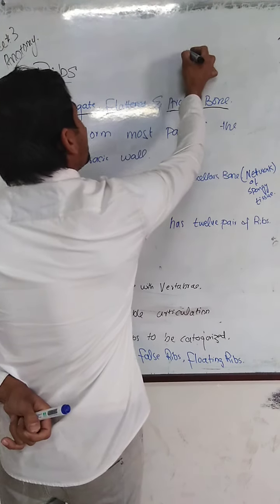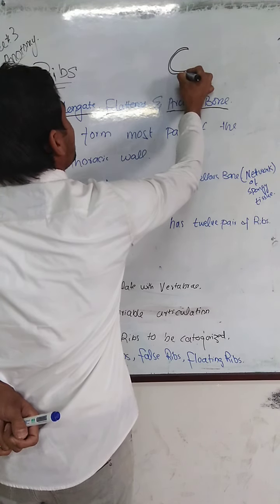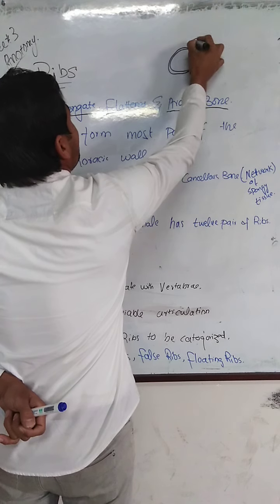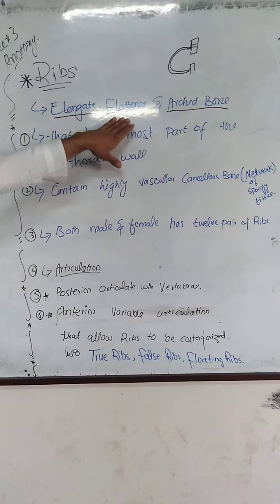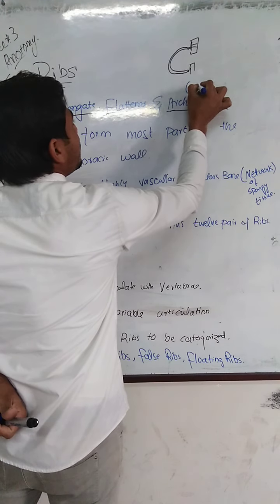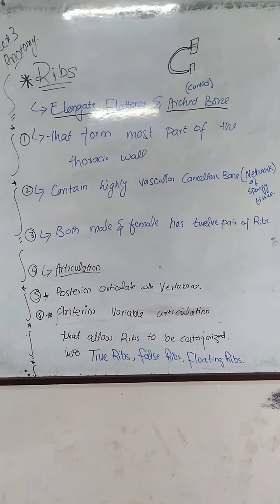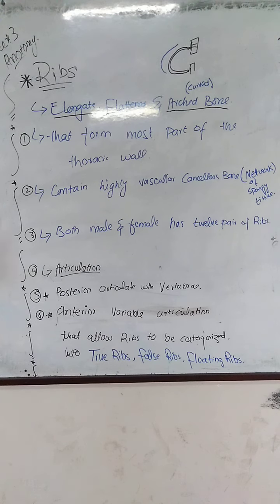It is an elongated structure. If it is posteriorly, then it is anteriorly — this is how it comes to start. It is elongated and flattened. This is the arch bone — this is the curved bone.